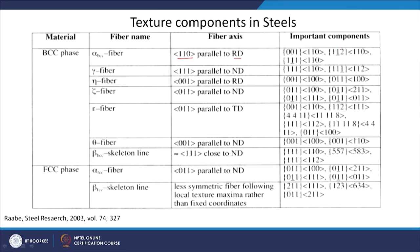We are not specifying the plane here. That means we take any plane, and if it contains the 110 direction that direction can be made parallel to RD, but there is no specification for the plane. So the planes written here can be 001, 112, or 111. For all the HKL UVW of this texture component the direction will remain the same. If you have this condition, we call it the 110 fibre, which in case of BCC material is the alpha fibre. There is another very important fibre called the gamma fibre.